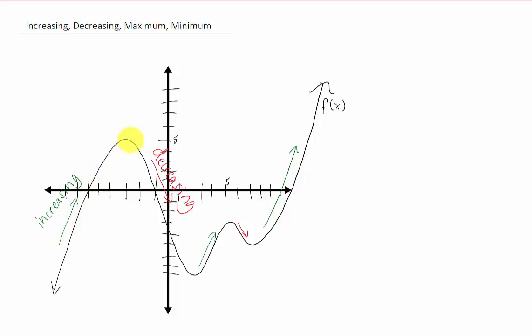Where this function changes from increasing to decreasing, right there at that point, we get a local or relative maximum. Where a function changes from decreasing back to increasing, right there, we get a local or relative minimum.